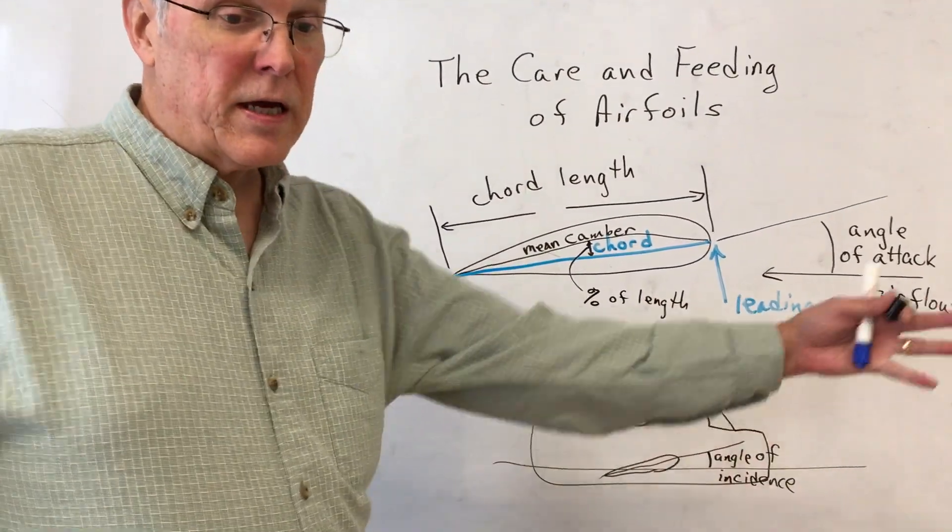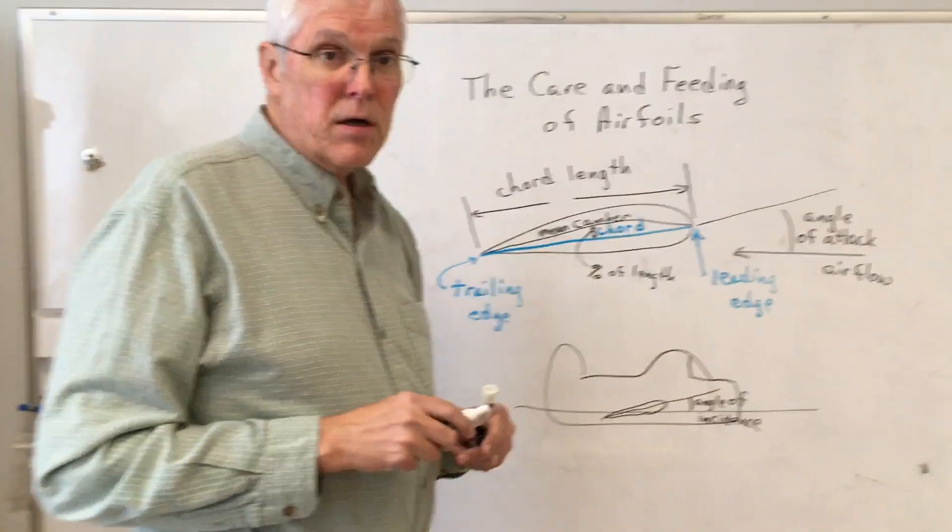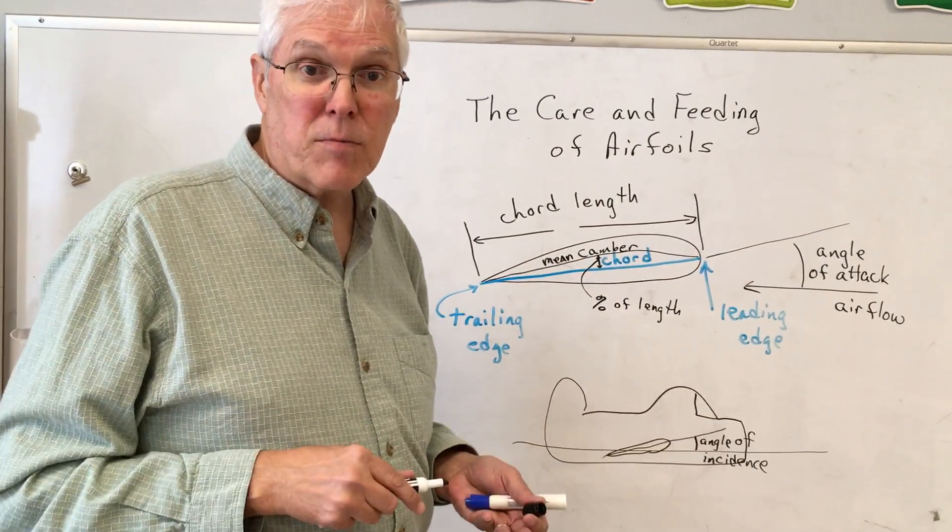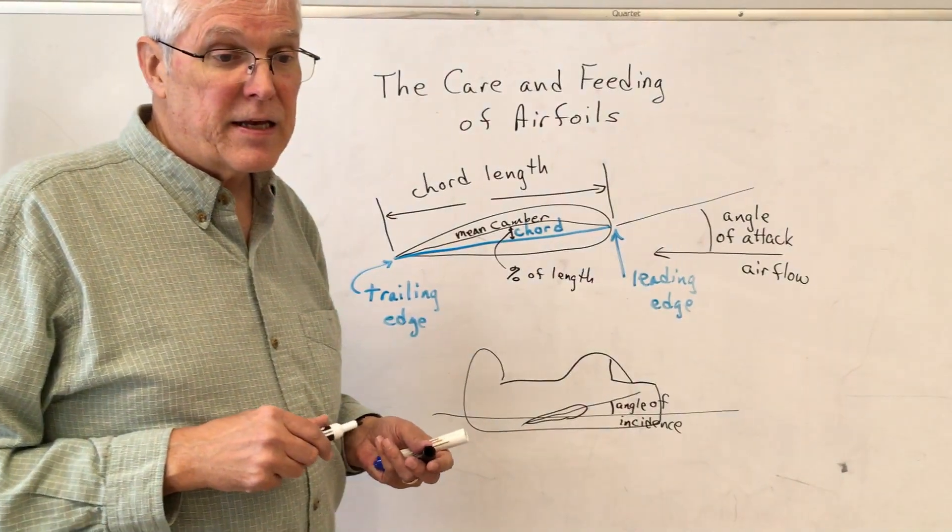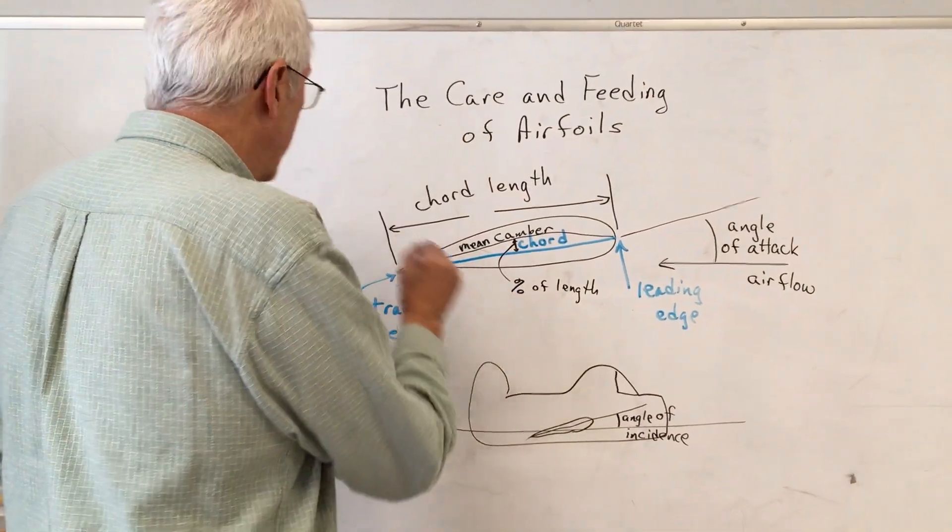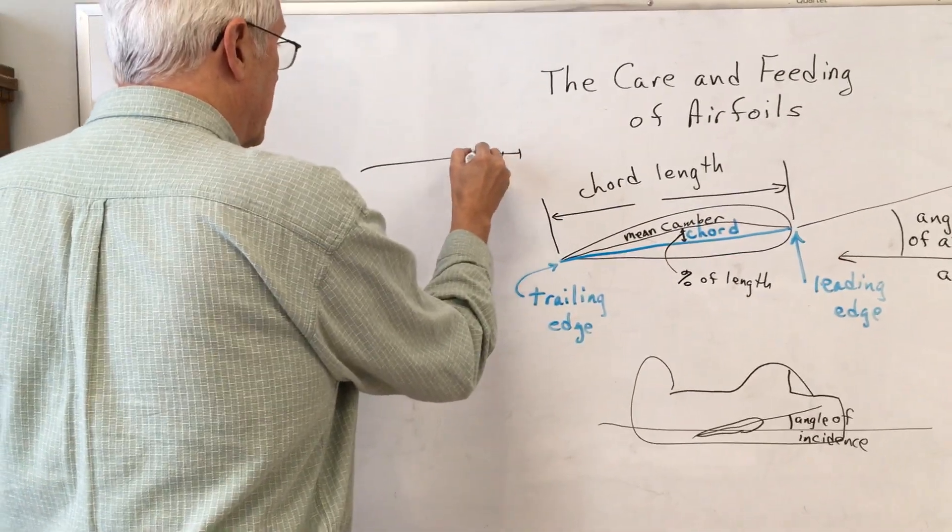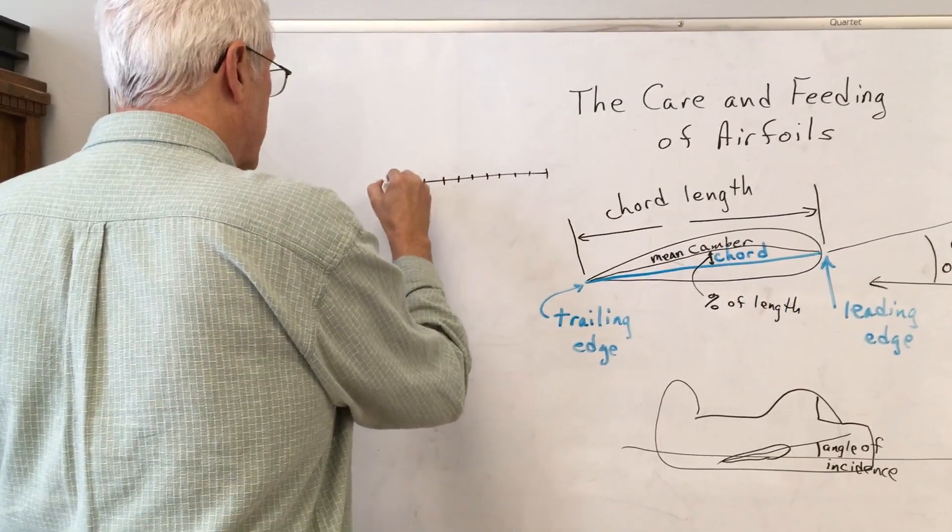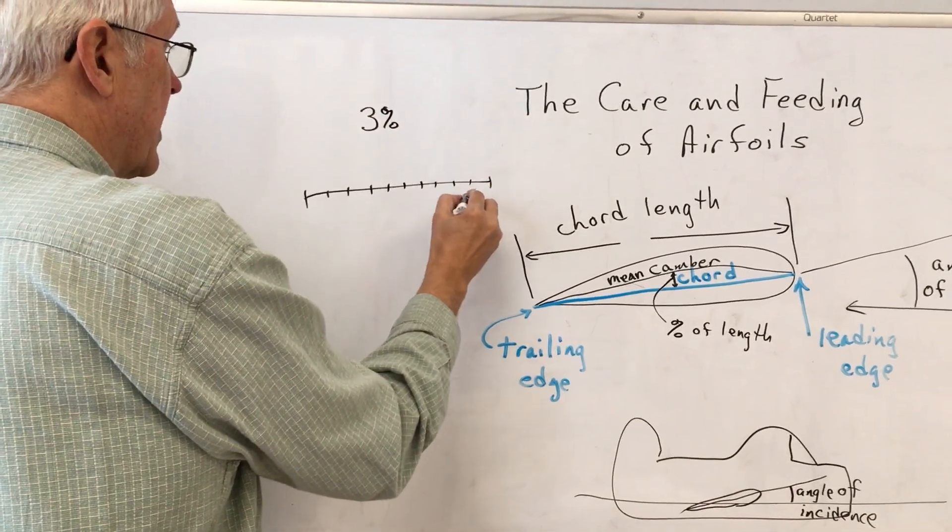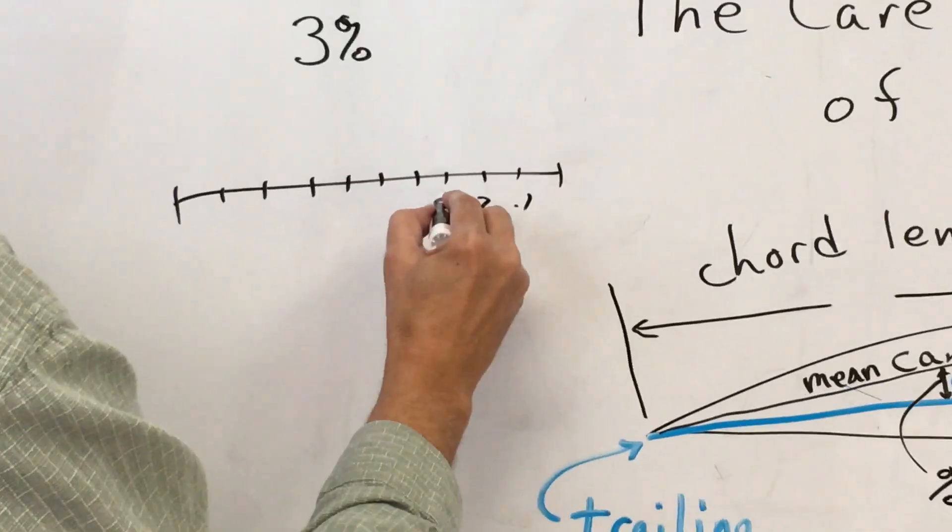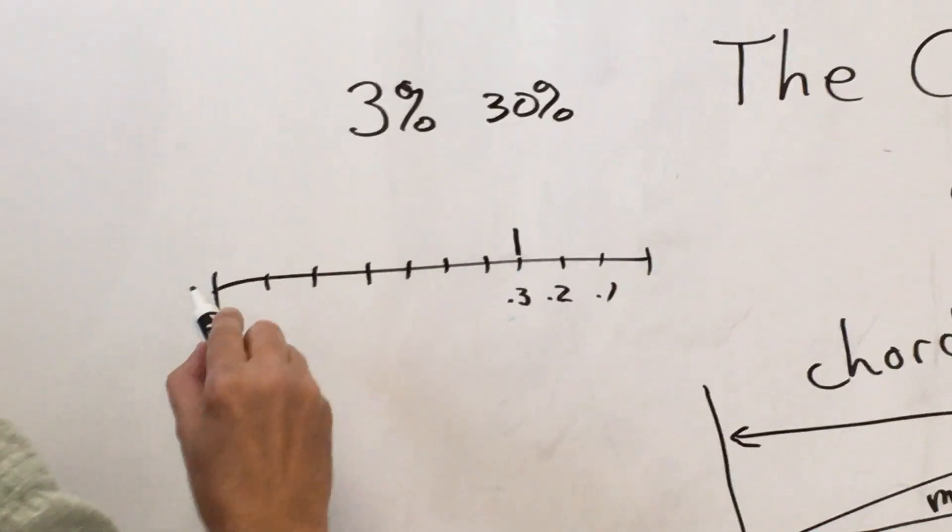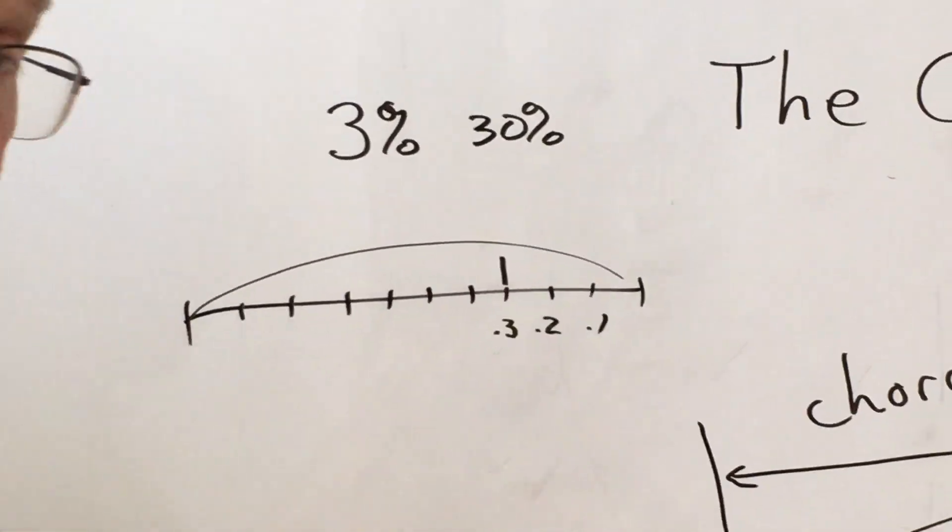So if you have a wing that has a ten-foot chord length and you have a camber of three percent, you take three percent of ten feet and that's how much you bend the wing. Now the second digit is the distance of where this max camber occurs, and what they do is they take the chord length and they measure it off in tenths: one, two, three, four, five, six, seven, eight, nine, ten. So if we have a three percent camber and it occurs at the thirty percent mark, we know to measure three percent up at the thirty percent and then we can draw our curve like that.